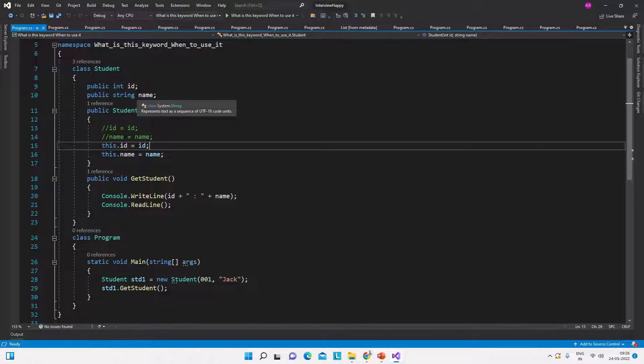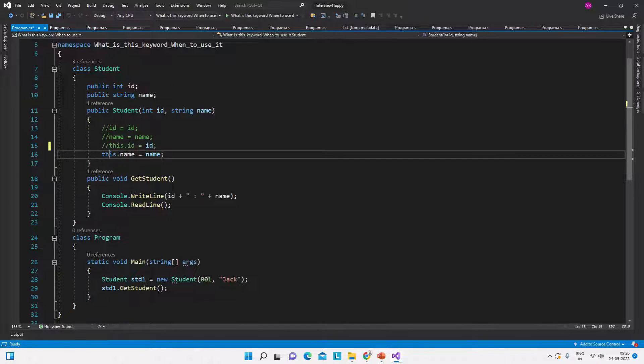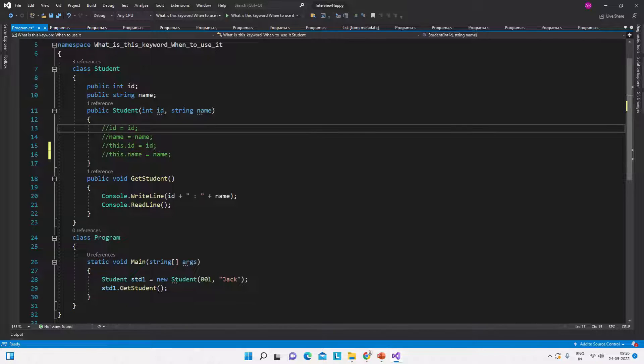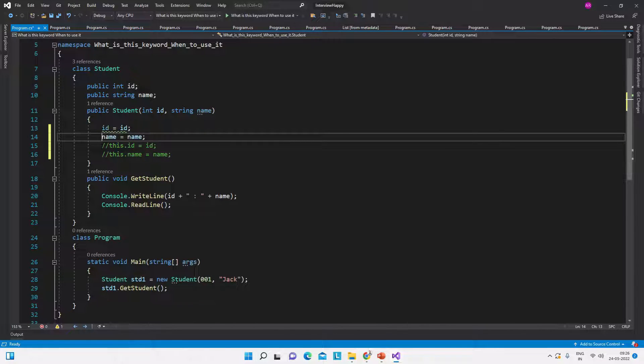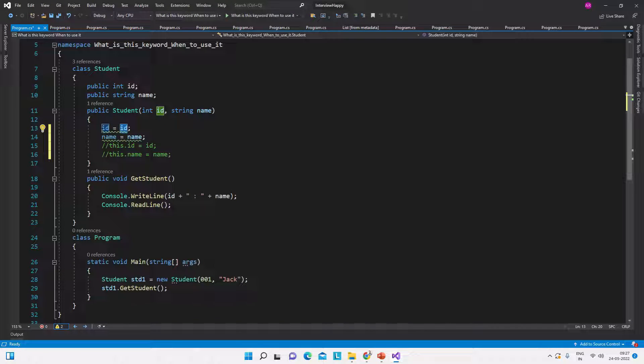So see here we have the same code: the same Student class, the fields, the constructor with the parameters. If I will not use the 'this' keyword here, I have to set the field value with the parameter value, but is it possible? It is not possible. Assignment made to the same variable—did you mean to assign it to something else? This doesn't make any sense, like we are assigning parameter to the parameter. So in order to assign the parameter to the field, we have to use the 'this' keyword.